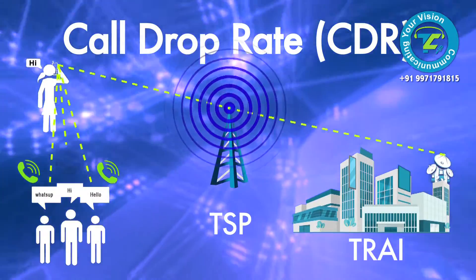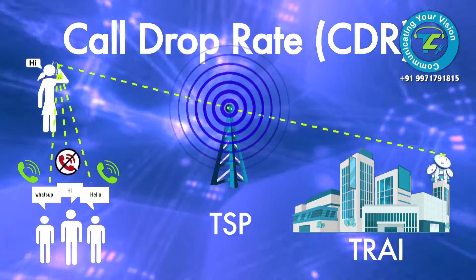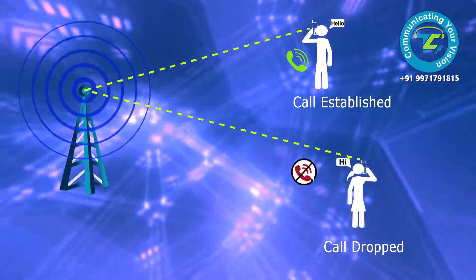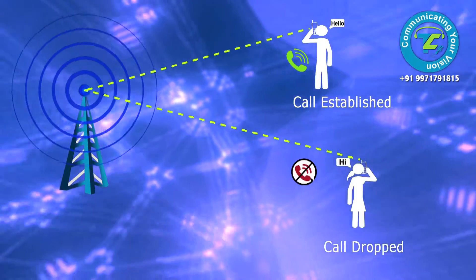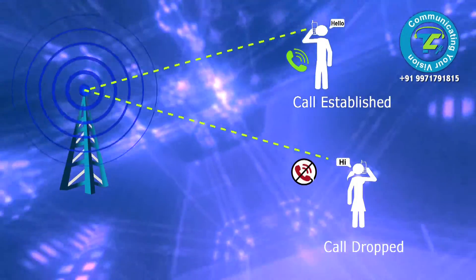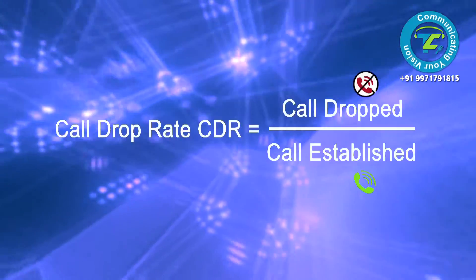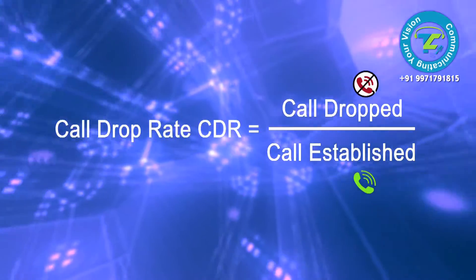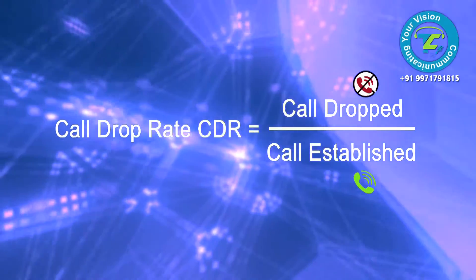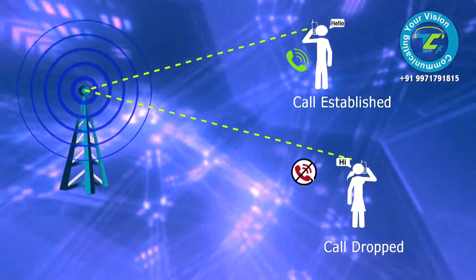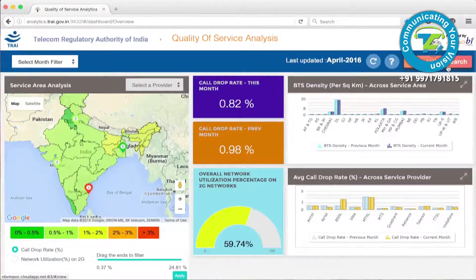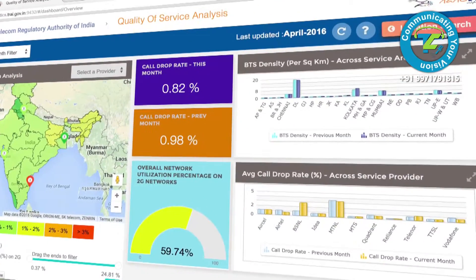For service providers supplying data on calls established and calls dropped, the call drop rate is calculated as a ratio of calls dropped to calls established at a BTS level during busy hours.